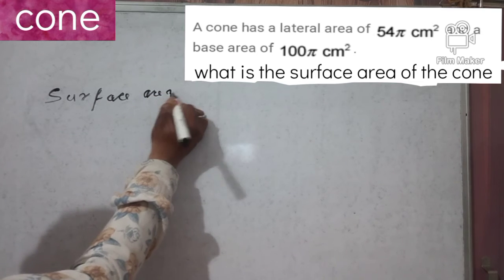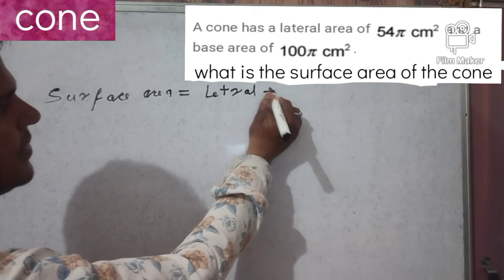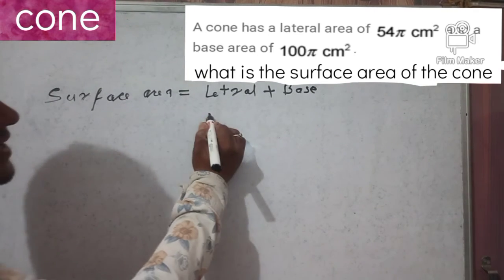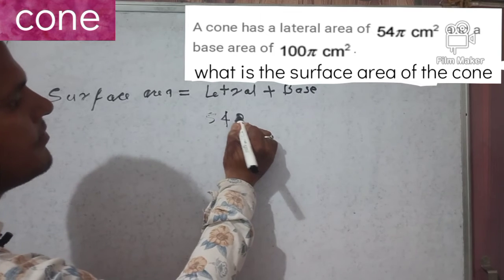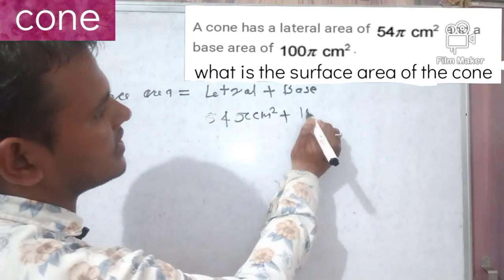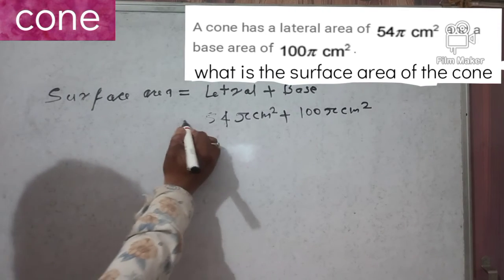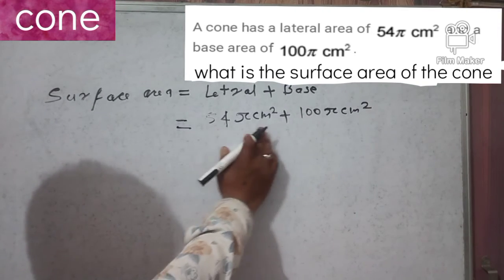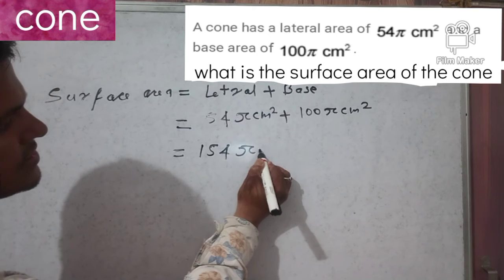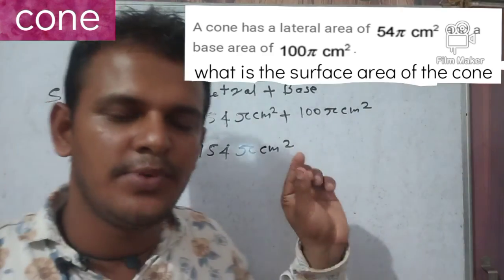Surface area is equal to lateral area plus base area. The lateral area is given as 54 pi centimeters squared and the base area is given as 100 pi centimeters squared. So the surface area is equal to 154 pi centimeters squared.